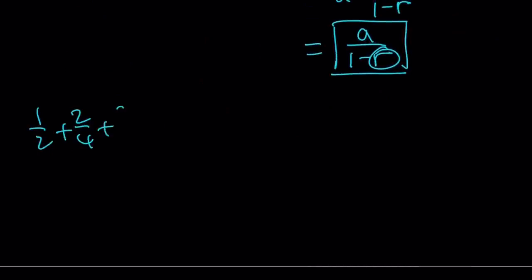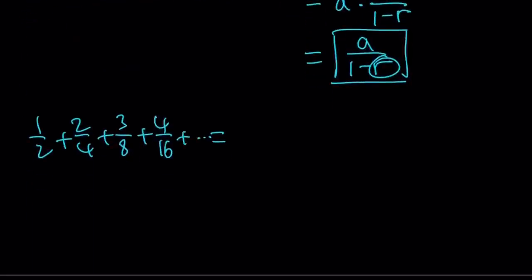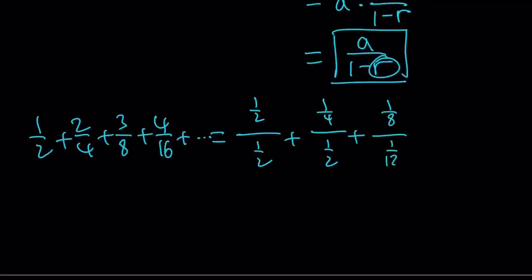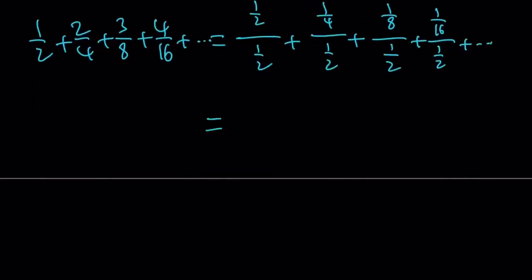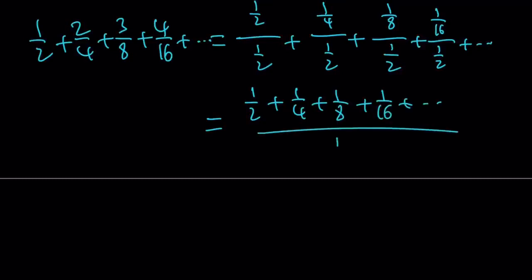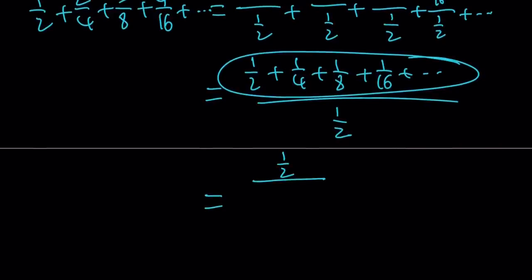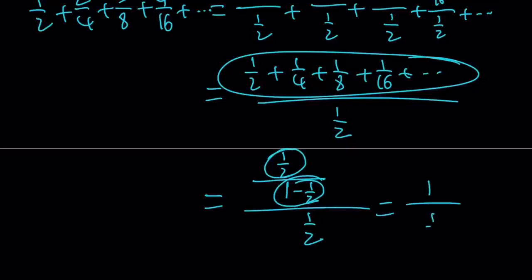So our series can be written as: 1 half over 1 half, plus 1 fourth over 1 half, plus 1 eighth over 1 half, plus 1 sixteenth over 1 half, so on and so forth. Notice that they all have the same denominator. So we factor that out, giving us (1 half plus 1 fourth plus 1 eighth plus 1 sixteenth dot dot dot) divided by 1 half. By the geometric series formula, the numerator is A divided by 1 minus 1 half, which is 1 half divided by 1 half, giving 1. So this is 1 over 1 half, which is 2.